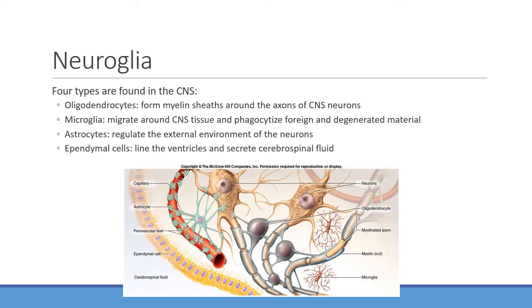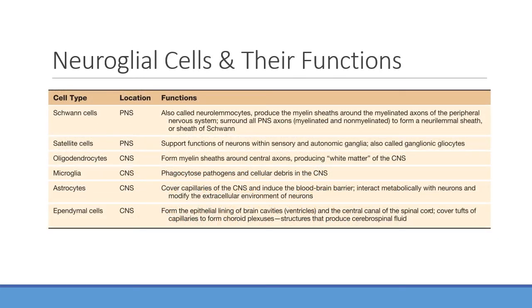Too much CSF can be very bad because the brain needs only a nominal amount of pressure. Since the skull is a closed system, too much pressure forces the brain downward through the brainstem, causing herniation — which is usually pretty fatal. You can refer back to the slide covering the different cell types and their main functions.